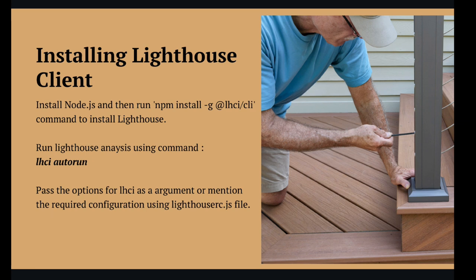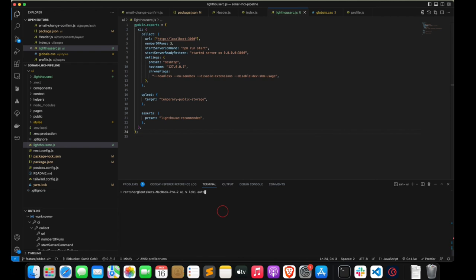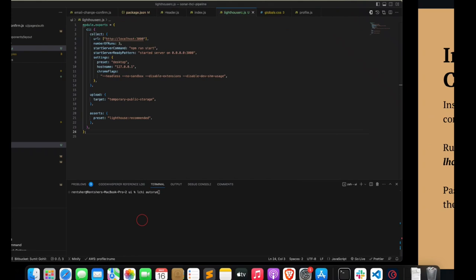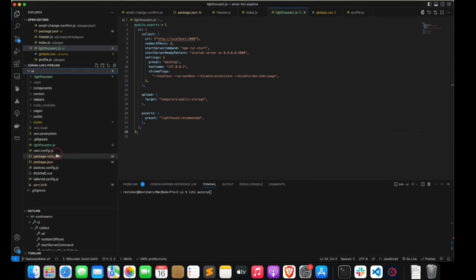There are two ways to start LHCI report generation: one is by passing arguments along with the LHCI autorun command, but there is a more predominant way which is using a lighthouserc.js file. In the project containing the UI, we keep this file in the root folder. Inside the UI folder I have created a file called lighthouserc.js.